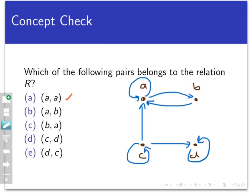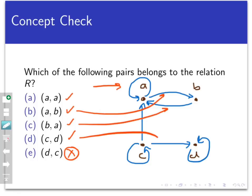So all of these pairs except the last one belong to the relation R. The first four belong to the relation because we can see there's an edge pointing from the first coordinate to the second: A to itself, A back to B, B back to A, and C to D, but there's no edge pointing from D to C.